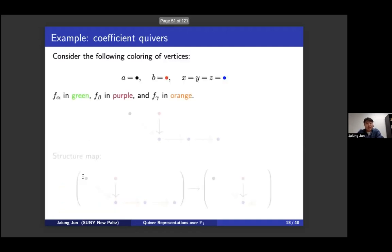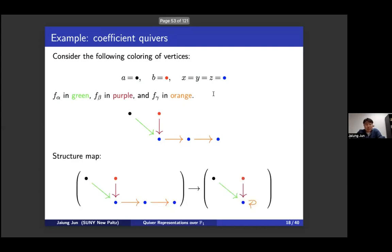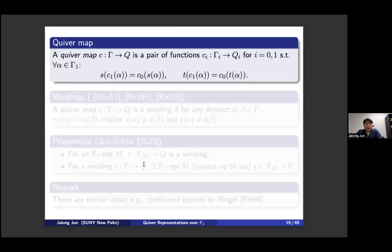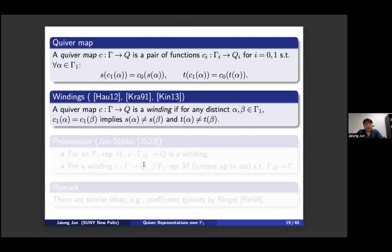Likewise we can construct the coefficient quiver: color vertex v1 black, v2 red, v3 blue, and also color the arrows accordingly to obtain the coefficient quiver. Based on this coloring we get the structure map — same color maps to same color — so green goes to green, red to red, orange to orange, and likewise for vertices. This structure map is actually a map of directed graphs, i.e., a quiver map.